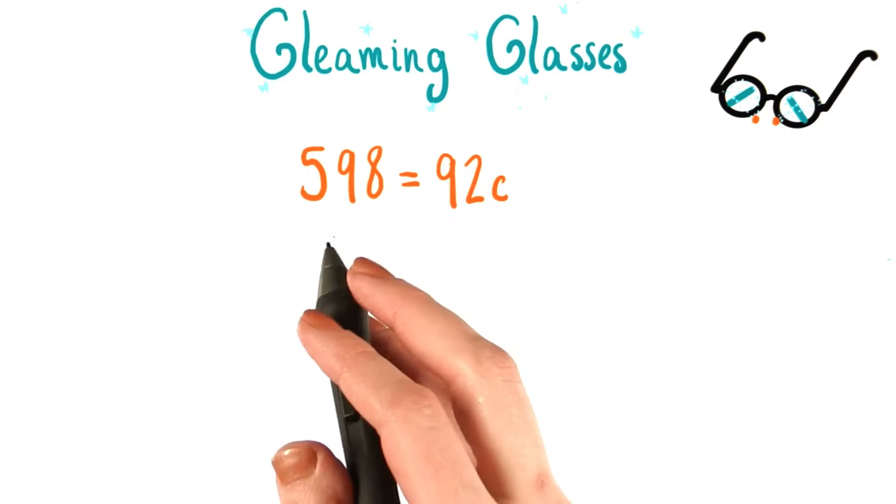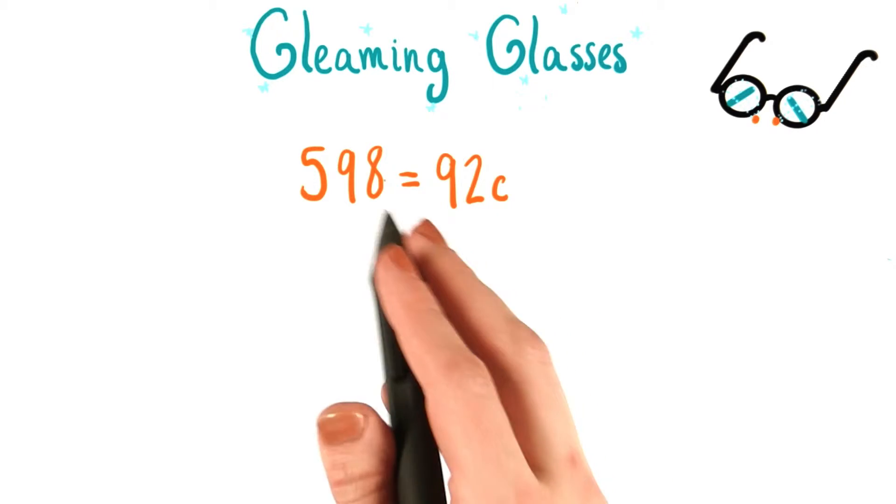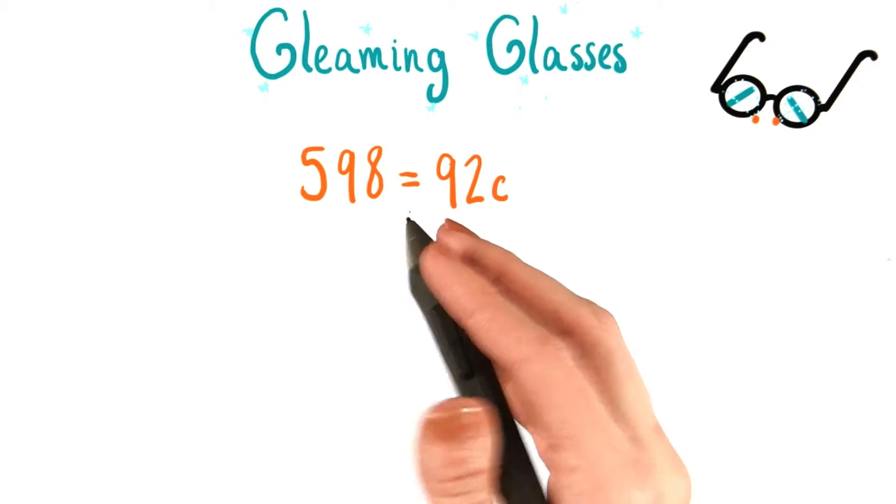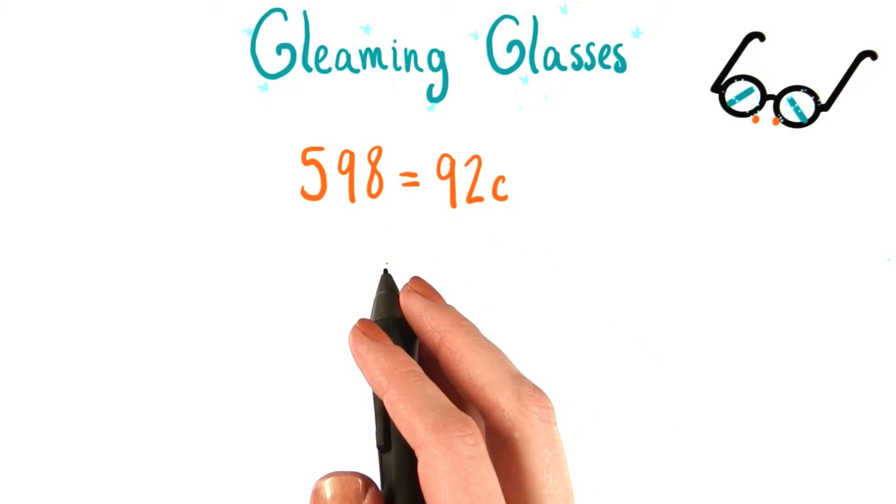Now, to ensure that both sides of the equation actually remain equal to each other, so that we can legally continue to write equal signs in our equation, whatever we do to one side of the equation, we need to do to the other side as well.